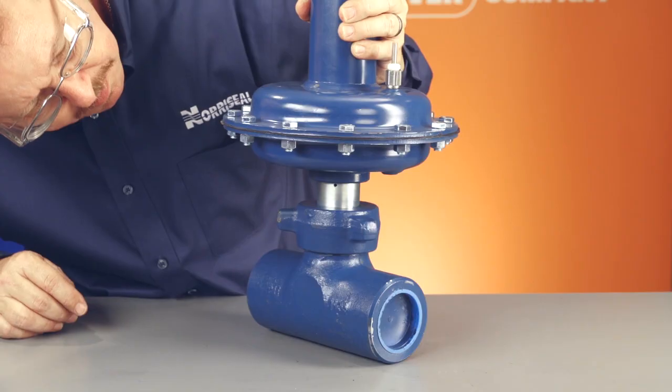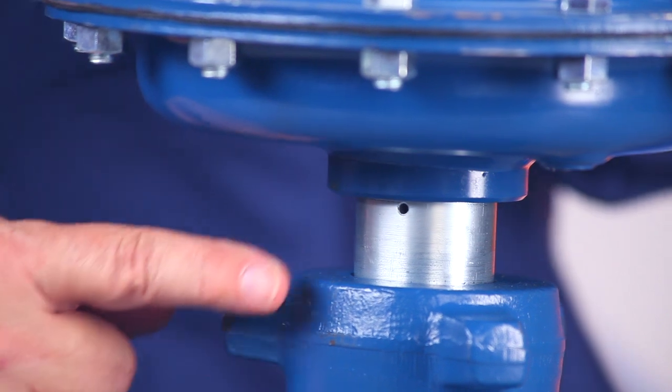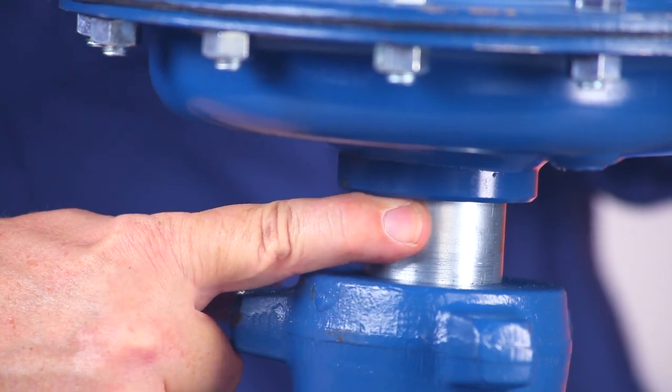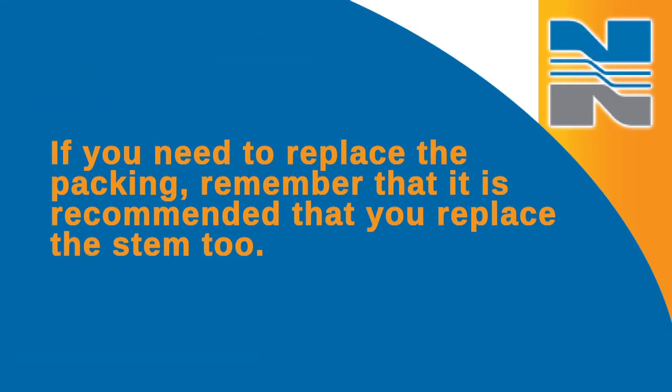The packing is easy to check. Just take a look at the vent hole on the side. If it's leaking, it means the packing has been damaged. If you need to replace the packing, remember that it's recommended that you replace the stem too.